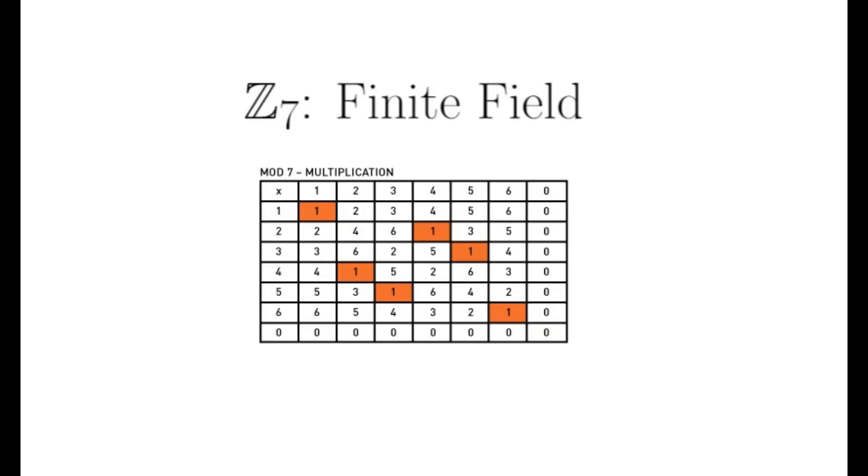Now we can discuss some finite fields or Galois fields. This is a multiplication table for Z7. Notice that as you go down each row, each row contains exactly one number 1, which is highlighted. This means that every non-zero element has a multiplicative inverse. This is not true for Zn for every choice of n. So let's look at another example.